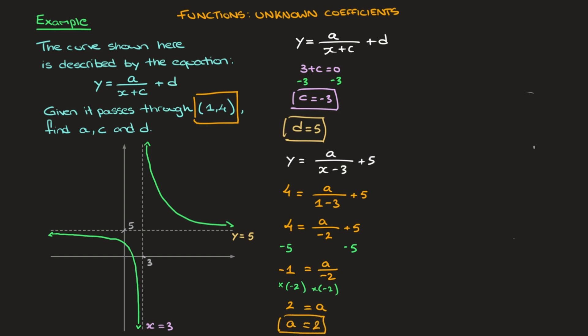We've now found all three of the unknown coefficients a, c, and d. And so to finish, we could write this function's equation with the known coefficients. And so that would be y equals 2 over x minus 3 plus 5. And that's the final answer. And there we go. That's it for this video on functions with unknown coefficients.